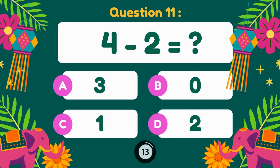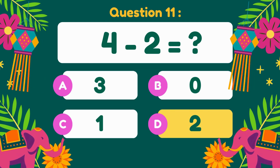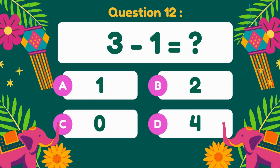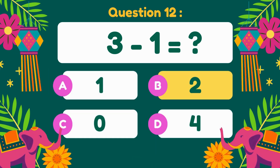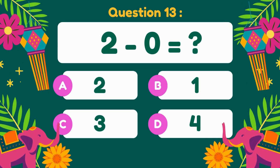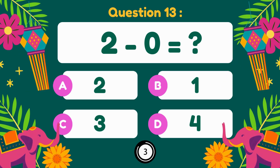4 minus 2. 4 minus 2 equals 2. 3 minus 1 equals 2. 2 minus 0 equals 2.